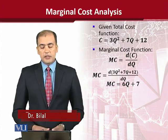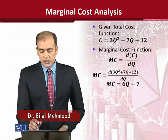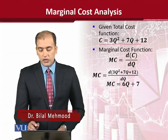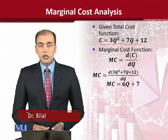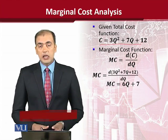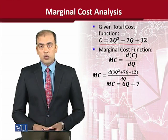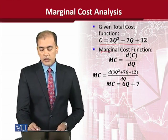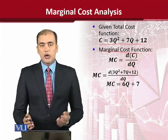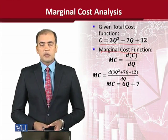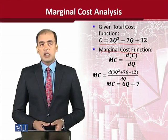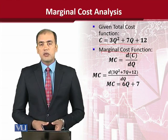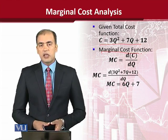In this case we are given a total cost function which is actually a quadratic function — when it comes to the degree of equation, it's equal to 2 in this case. Now once we need to find out the marginal cost function, it is very simple because we need to take the derivative, and for the derivative we need to know the rules of derivative.